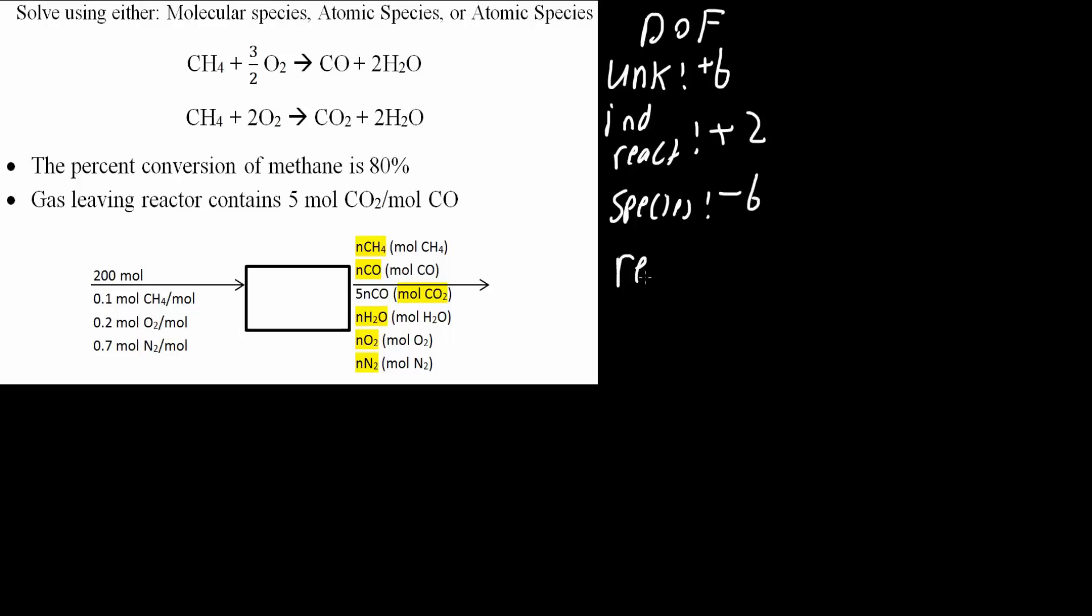And how many relationships do we have? So we have one, 80%, and this is the other relationship, the whole five moles of CO2 per mole of CO. So the five to one ratio, so that's minus two. So six plus two minus six minus two, we get zero, and so we can solve this problem.